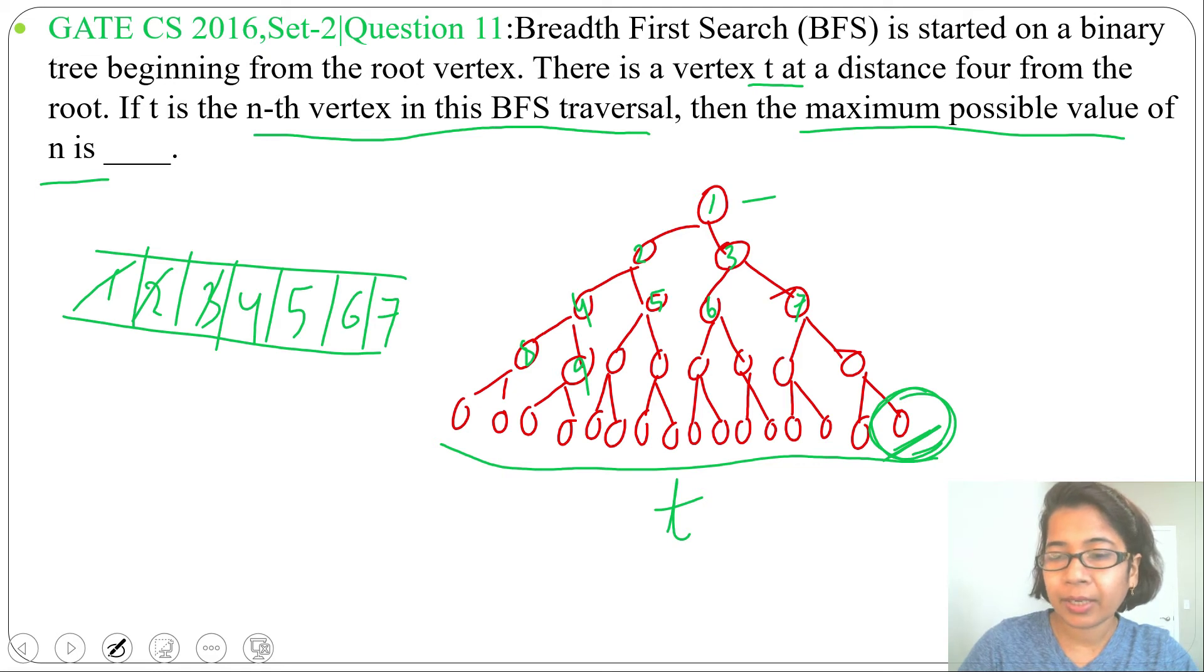This is our last node. So indirectly, it's asking how many nodes are possible at height 4 in a binary tree. For height 4, the number of nodes possible is 2^(4+1) - 1, which is 2^5 - 1, which equals 31.